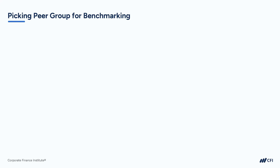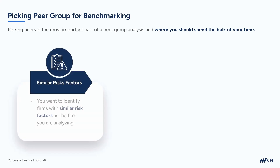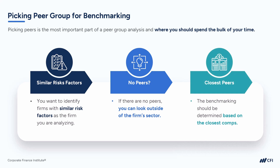Realistically, picking relevant peers is the most important part of a peer group analysis, and it's where you should spend the bulk of your time, unless you are already a specific industry expert. The goal is to find peers with similar risk factors as the company you're analyzing. If there are absolutely no good peers, you may want to look at companies in different sectors that have similar characteristics, but this should be done very rarely and very carefully. Ultimately, your benchmarking should be determined based on the closest and best peers to the company you're analyzing.